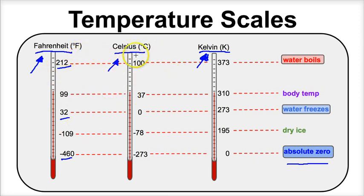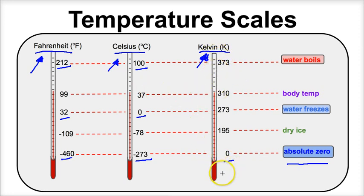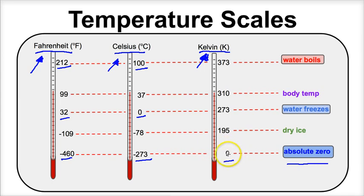If we compare these temperatures to the Celsius scale, absolute zero is negative 273 degrees Celsius, and water is going to freeze at zero degrees Celsius and boil at 100 degrees Celsius. Last but not least, on the Kelvin scale, absolute zero is zero K — notice I didn't say degrees K, it's just zero K, and nothing is colder than this. So there are no negative Kelvin temperatures. Water is going to freeze at 273 K and water is going to boil at 373 K.